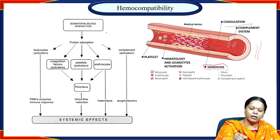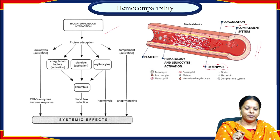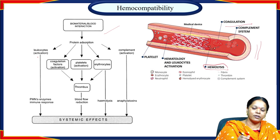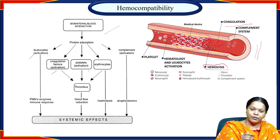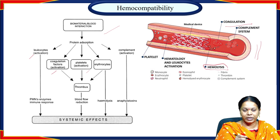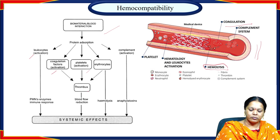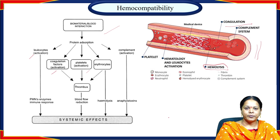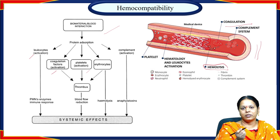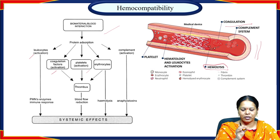When studying blood compatibility and biomaterial-blood interaction, we focus majorly on protein absorption. This absorption is driven by several factors: leukocytes (WBCs) and coagulation factors enable platelets to come together and adhere to one another. Once activated, they form a thrombus, which is a major threat to blood vessel and blood flow because it obstructs flow. When there is obstruction, blood stagnates and further thrombus forms, eventually blocking the blood vessel completely.